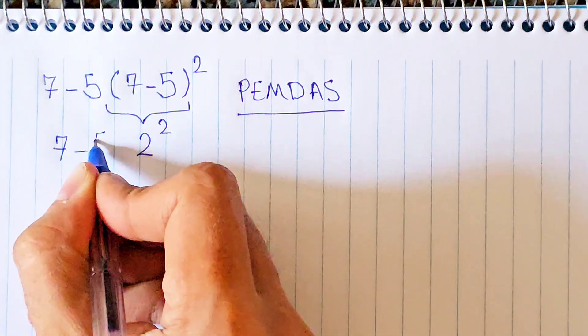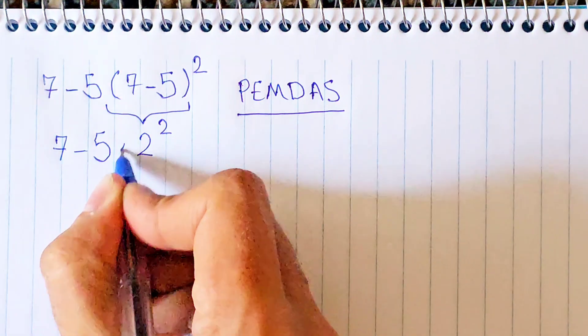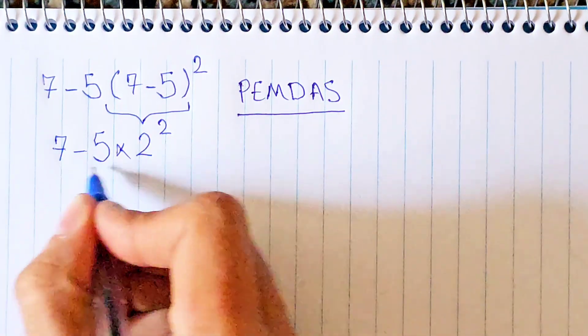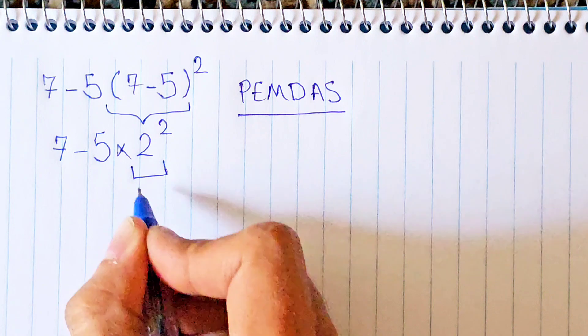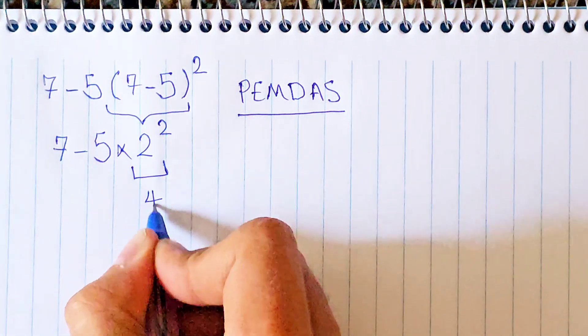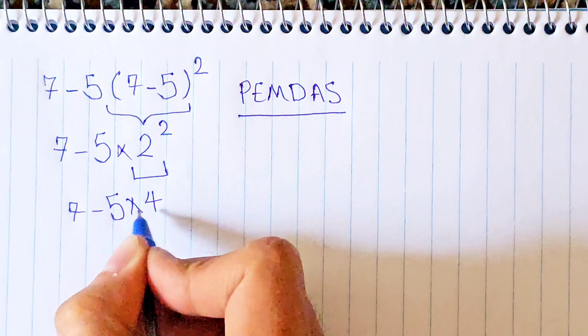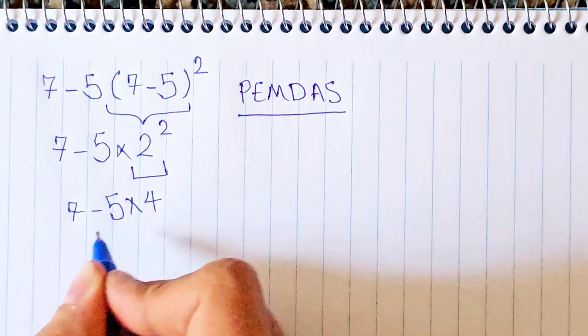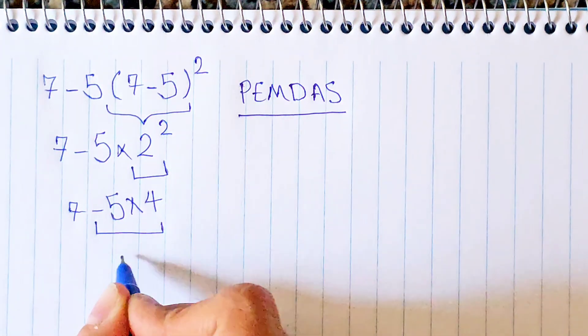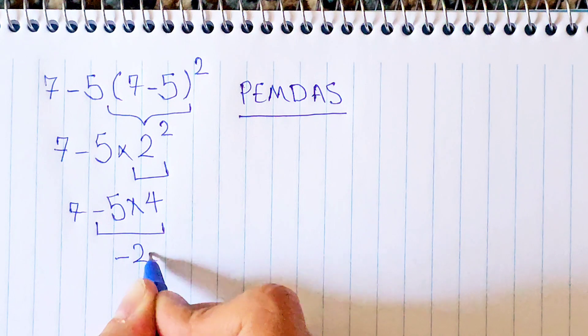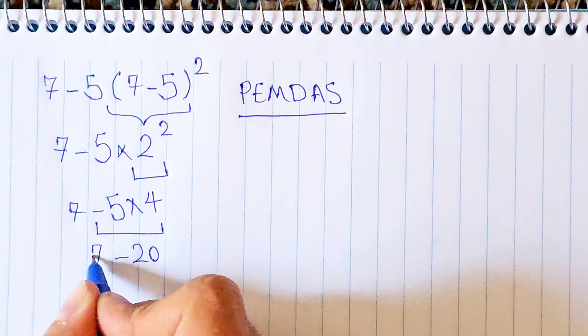First we simplify the exponent. 2 to the power of 2 equals 4. In the new expression we have 7 minus 5 times 4. First we do multiplication: negative 5 times 4 equals negative 12. And we simplify and get the final answer.